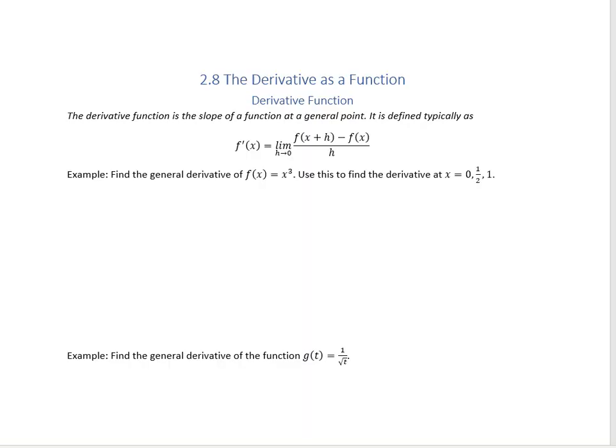In section 2.8, we're going to be looking at the derivative as a function. In section 2.7, we looked at the derivative at a certain point. What we want to do is keep it general so that we can find the derivative at multiple points. For example, if you're driving a car for four hours, instead of looking at just what your speed was at hour two, we could find a function and find your speed at any given time.